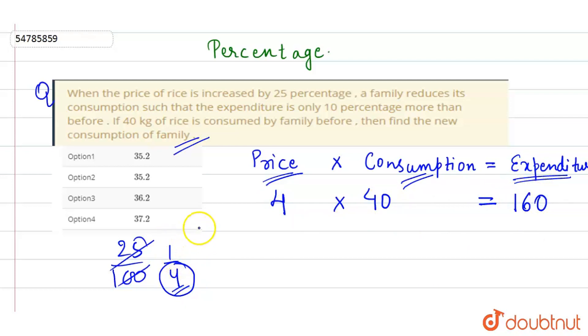Now, the price becomes 5. We need to find the new consumption, which we'll call x.